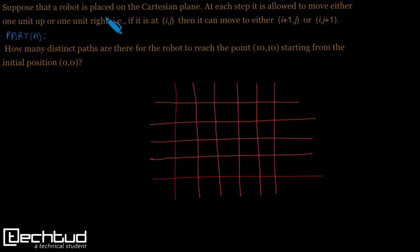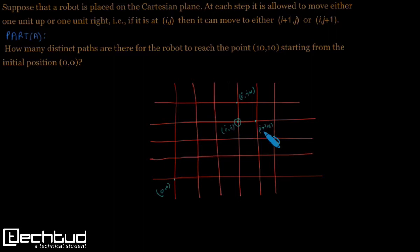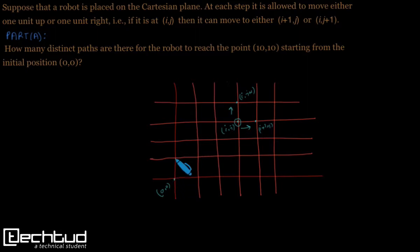The question is: we have a robot on a Cartesian plane. If the robot is at coordinate i,j, and we take 0,0 as the origin, the robot will move either to i, j+1 or to i+1, j — that means the robot will move either up or to the right. We have to follow this movement and travel from 0,0 to 10,10.